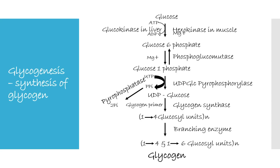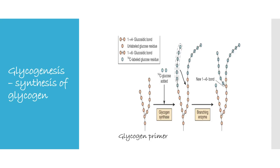The next reaction is catalyzed by glycogen synthase, which requires a glycogen primer. Glycogen synthase forms alpha-1,4 glycosidic bonds between C1 of UDP-glucose and C4 of terminal glucose residues in the glycogen primer, which is present on glycogenin protein. This continues until 11 glucose residues are added. Then branching enzyme transfers a segment of glucose residues to a neighboring chain by forming alpha-1,6 glycosidic linkage, producing glycogen with both alpha-1,4 and alpha-1,6 linkages. These reactions are irreversible.